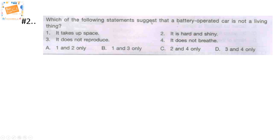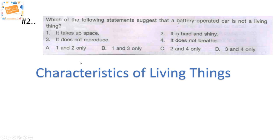Next question: which of the following statements suggests that a battery-operated car is not a living thing? One — it takes up space. Two — it is hard and shiny. Three — it does not reproduce. Four — it does not breathe. The options are: A — one and two only, B — one and three only, C — two and four only, or D — three and four only. Why don't you try? Remember the characteristics of living things.